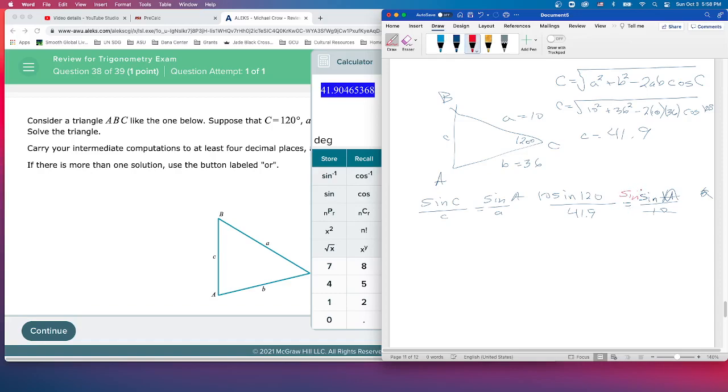And again, you'll take the inverse sine of both sides because we want a, not the sine of a. This and the inverse sine of this. So we'll just put that all in the calculator and we'll get that a is equal to... Go ahead and write it out: inverse sine of 10 times the sine of 120 all over 41.9.